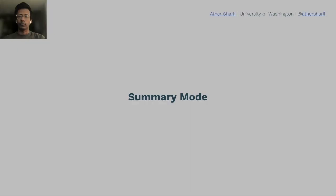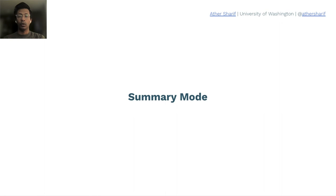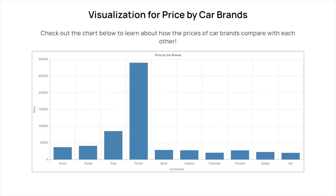The second mode was a summary mode, which enables users to get a holistic view of the data through a summary. We used findings from prior work to generate the summary contents. A summary response from VoxLens sounds like: 'Graph with title, price by car brands. The x-axis is car brands. The y-axis is price. The maximum data point is $290,000 belonging to Ferrari, and the minimum data point is $20,000 belonging to Kia. The average is $60,000.'